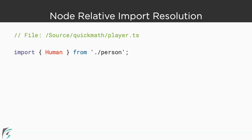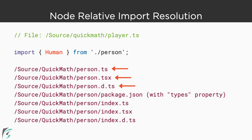Now let us look at using the node resolution strategy with relative references, using the same example import statement. TypeScript will first look for the person module in the current directory with one of three valid TypeScript file extensions: .ts, .tsx, or .d.ts. The .tsx files are the TypeScript equivalent of JavaScript JSX files used with popular frameworks like React. If those files don't exist, the compiler will check for a package.json file in a directory named after the module. If that file exists and has a types property, that directs the compiler to the correct file. Otherwise, the compiler will look in a directory named after the module for a file named index with one of the three valid TypeScript file extensions.